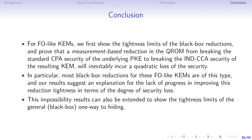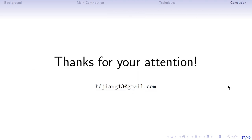In conclusion, for FO-like KEMs, we first show the tightness limits of black-box reductions and prove that a measurement-based reduction in the quantum random oracle model from breaking the standard CPA security of the underlying PKE to breaking the IND-CCA security of the resulting KEM inevitably incurs a quadratic security loss. In particular, most black-box reductions for FO-like KEMs are of this type, and our results explain the lack of progress in improving reduction tightness in terms of the degree of security loss. These impossibility results can also be extended to show the tightness limits of general black-box one-way-to-hiding. Thank you for your attention.